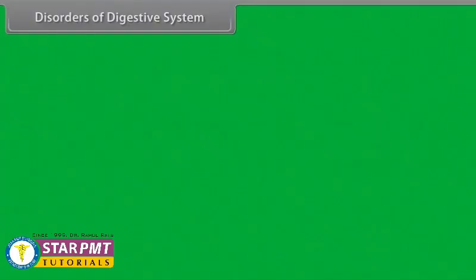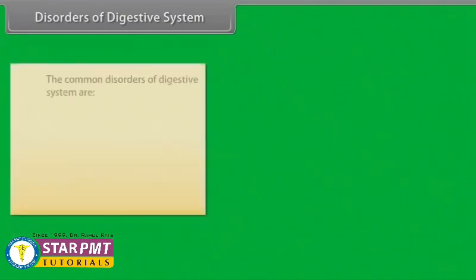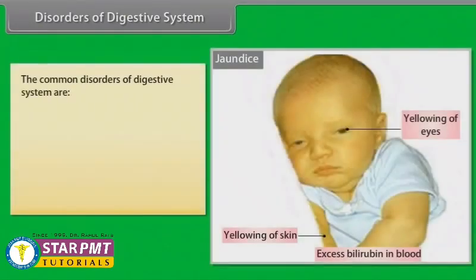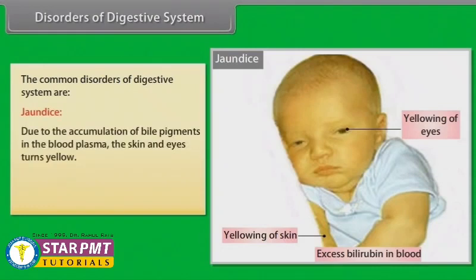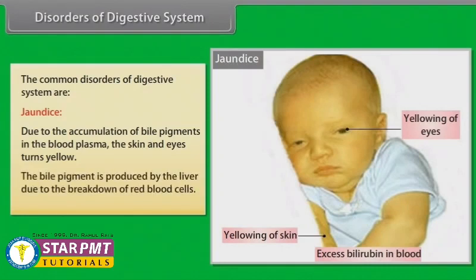The common disorders of the digestive system include jaundice, caused by the accumulation of bile pigments in the blood plasma, which turns the skin and eyes yellow. Bile pigment is produced by the liver due to the breakdown of red blood cells.